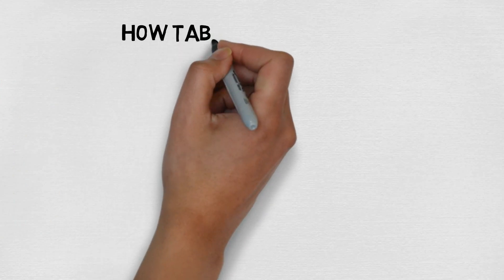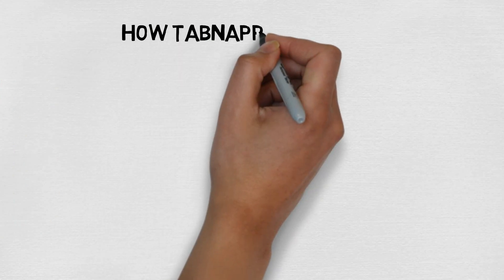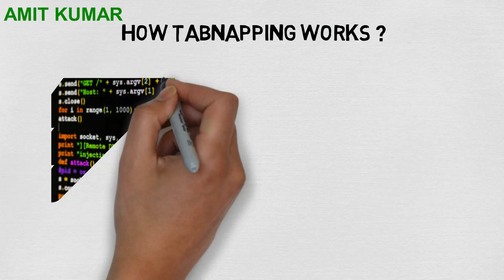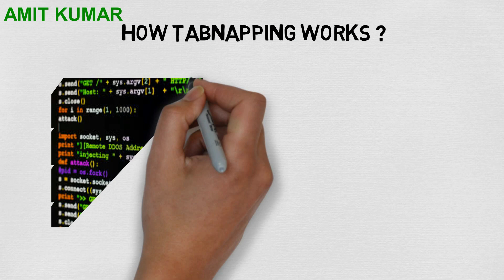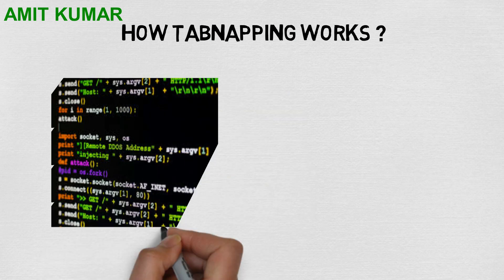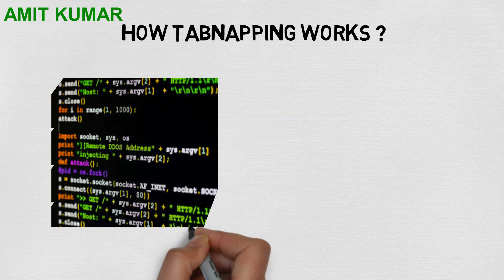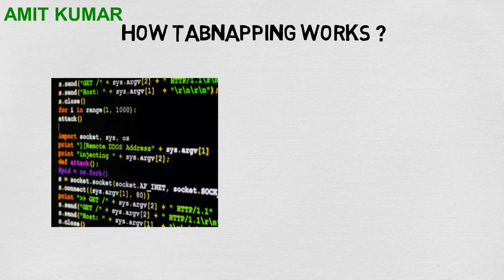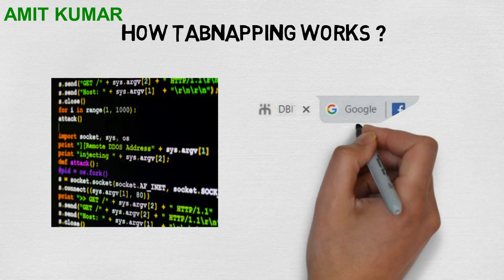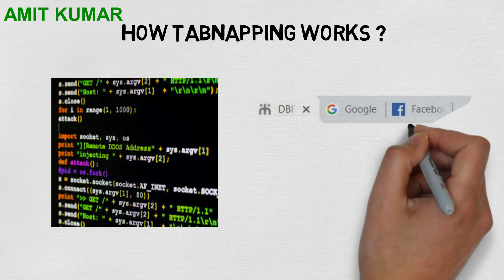Now let's see how tabnapping works. The attacker sets up a website that looks completely normal. Within the website's code, they place a checker to see if the tab has become inactive. Inactive tabs are tabs that you are not currently using.